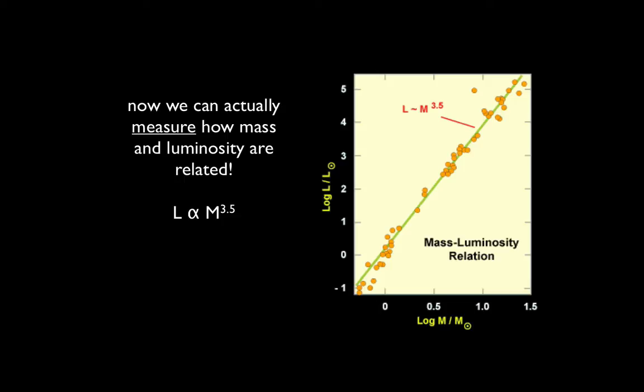So again, we see that our intuition was correct. More luminous stars are, in fact, more massive. And because of this high power of mass, it actually means that a small difference in mass leads to a very big increase in luminosity.